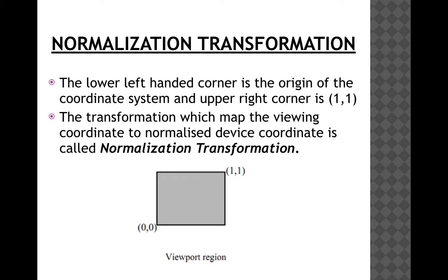In the normalized device coordinate system, the lower-left corner is the origin (0,0) and the upper-right corner is (1,1). The transformation that maps the viewing coordinate to the normalized device coordinate is called normalization transformation. Below is the diagram of the normalized viewport.